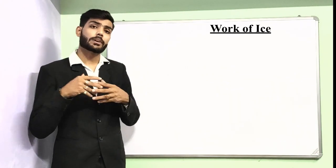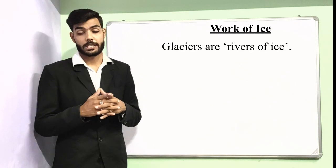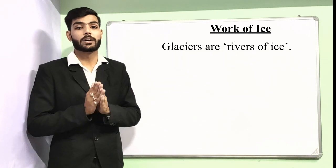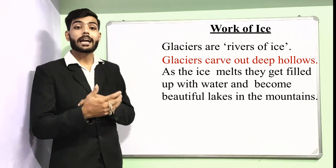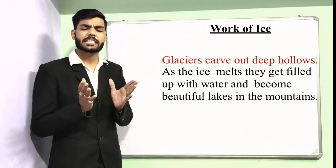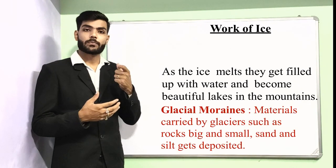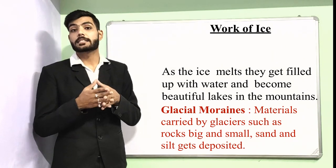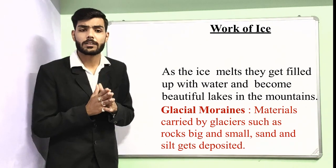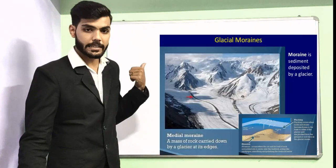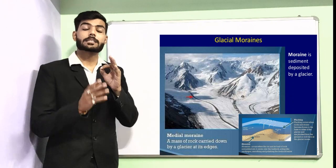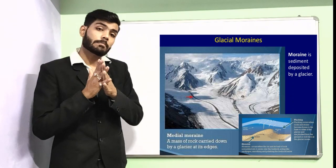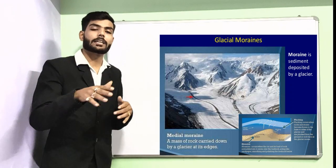Moving to the work of glaciers: glaciers are rivers of ice. Glaciers carve out deep hollows; as the ice melts, these hollows fill up with water and become beautiful lakes in the mountains. The materials carried by glaciers — such as big and small rocks and sand and silt — get deposited and are called glacial moraine. Medial moraine is a mass of rock carried down by the glacier at its edges.